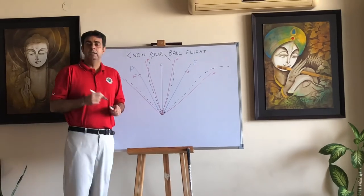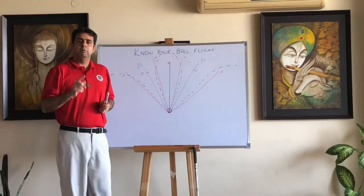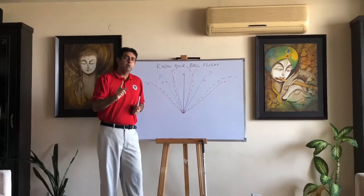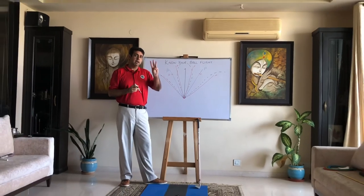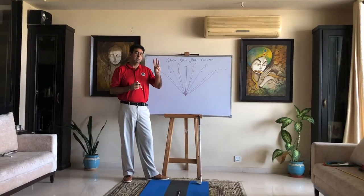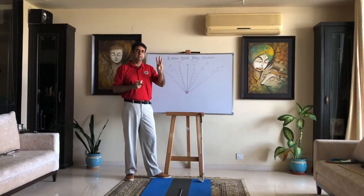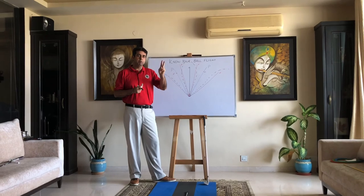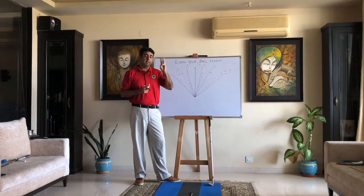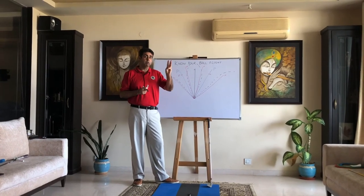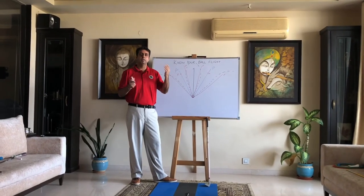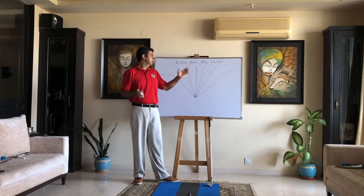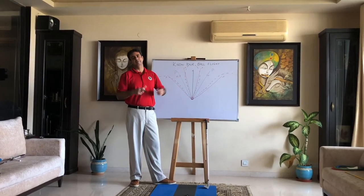So depending on whether you're an in-to-out or out-to-in swinger, the face can be equal to the path, open to the path, or closed to the path — and that's what gives you your ball flight result. Apply these rules and you will get that result.